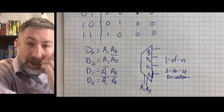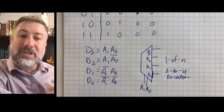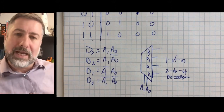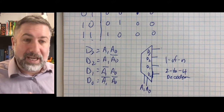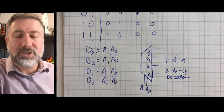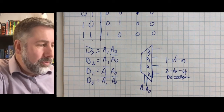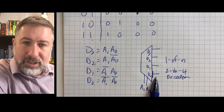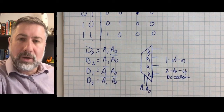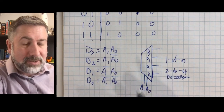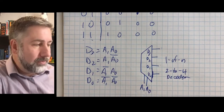If I wanted eight outputs instead, I would need three inputs — that would be a 3-to-8 decoder. And we can have a 1-to-2 decoder as well. Now, it's worth noting that by itself this is useful enough, but we also want the option with many of these combinational devices to turn them on or off as we go.